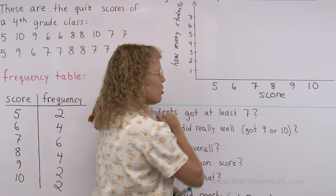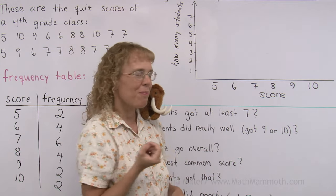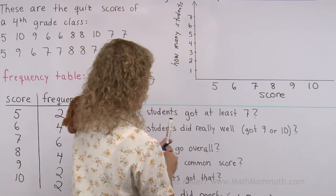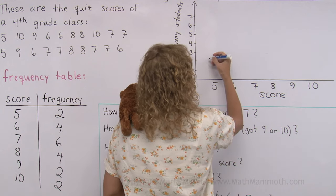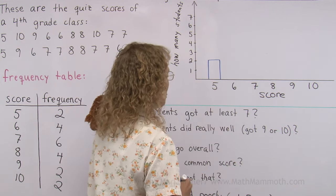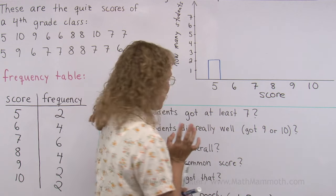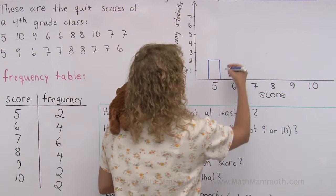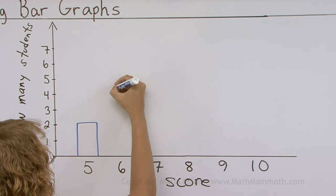And so how many students got five points? We read in our table two students. So now we draw the rectangle here. Then how many students got six? Again looking over there. Four students. So now this time we need to draw it four high.